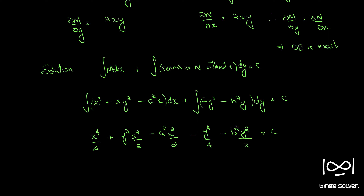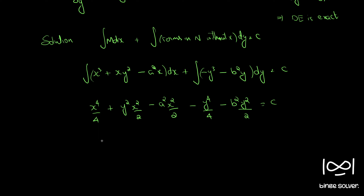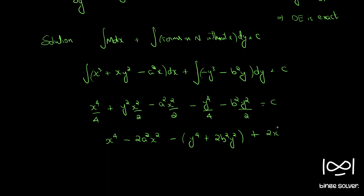If we multiply throughout by 4 and rearrange, we have x⁴ − 2a²x² − y⁴ + 2b²y² + 2x²y² = c.